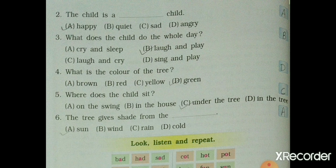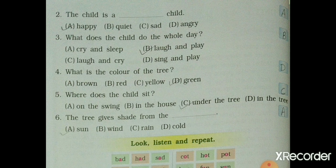Now fourth: what is the color of the tree? Option A is brown, B is red, C is yellow, D is green. The answer is D, green.